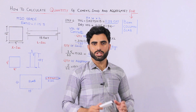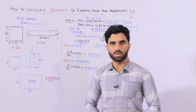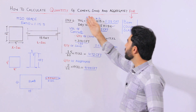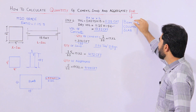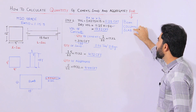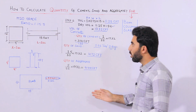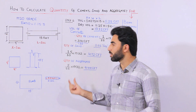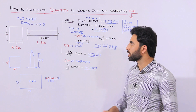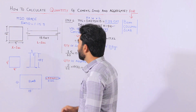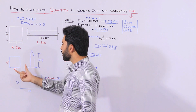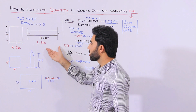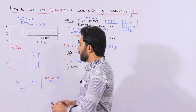Assalamualaikum guys. Today in this short video lecture I would like to guide you about how to calculate quantity of cement, sand, and aggregate in the construction of beam, column, and slab in RCC members. Watch this video till the end to know about estimation of different materials. The first one is beam, the second one is column, and the last one is slab. You can see their diagrams in the section.